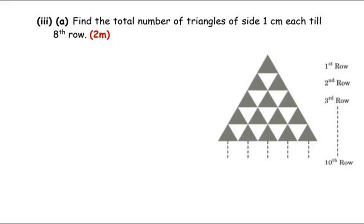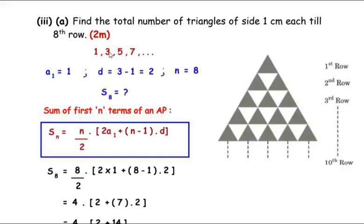The next question asks: find the total number of triangles of side 1 cm each till the 8th row. We count from top to bottom, adding triangles row by row: 1, then 1+3, then 1+3+5, and so on till row 8. The sequence is 1, 3, 5, ... so a₁ = 1, d = 2, and n = 8. We use the sum formula: Sₙ = (n/2) × [2a₁ + (n−1)d], so we need S₈.